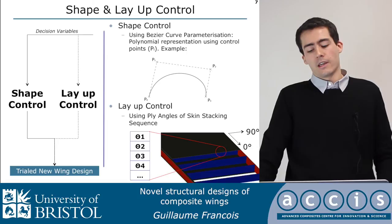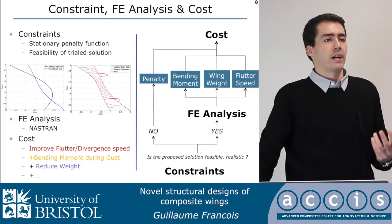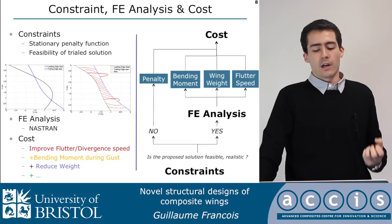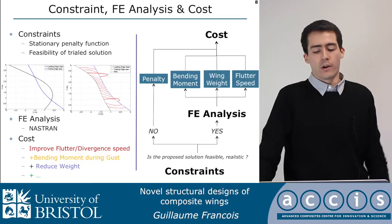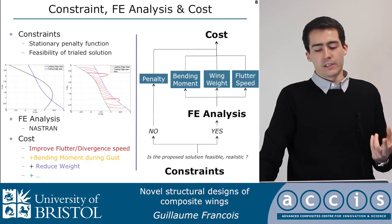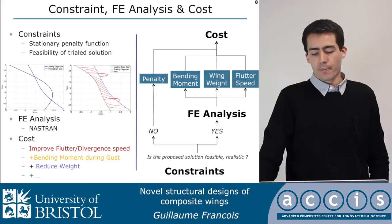That generates a set of new wing designs. We are only interested in realistic and feasible wing designs, so we apply a self-constraint to avoid processing unrealistic or unfeasible designs. If a design is realistic and feasible, the solution goes to an FEA solver for analysis and we extract the performances discussed earlier. If it is not realistic and feasible, we apply a penalty to inform the optimizer that this is a wrong solution, and that generates our cost function.